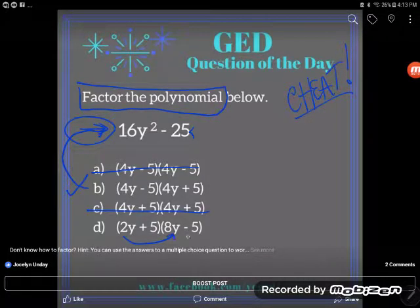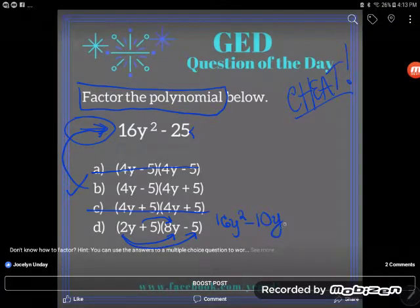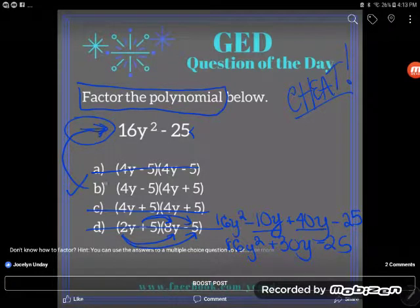So 2y times 8y would give me 16y squared. 2 times 8 is 16, and y times y is y squared. Then 2y times negative 5 would give me negative 10y. Then positive 5 times 8y would give me positive 40y. And positive 5 times negative 5 would give me negative 25. Again, I'm going to combine like terms in the middle. So I get 16y squared plus 30y minus 25.